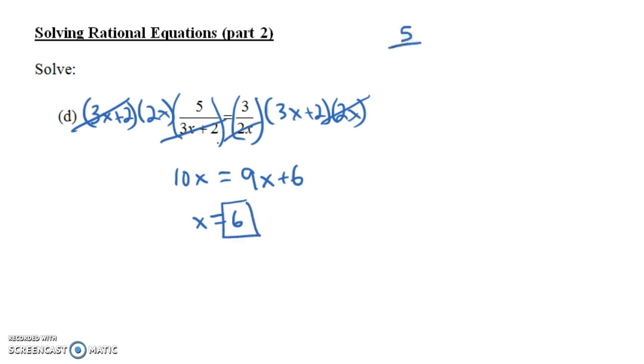If you plug in 6 into the left side of the original equation, you get 5 over 20, right, 18 plus 2. If you plug in 6 into the right side of the equation, you get 3 over 12. But notice, these are the same thing. They're both equal to 1 fourth. So 6 really did work.